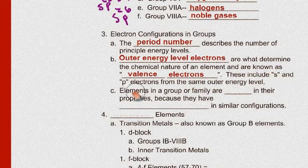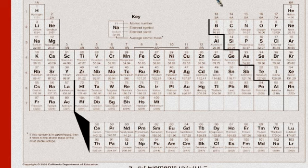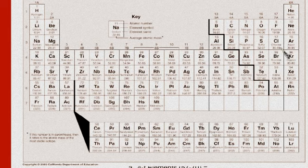Okay. The outer energy level electrons are what determine the chemical nature of an element, and these are known as the valence electrons. These include the S and P electrons from the same outer energy level. So let's talk about this for a second. So when we look at a noble gas, we notice that these guys over here. Helium has a, helium has a 1S2 configuration up here. Now it is completely filled. There, it has the, all of the electrons in its highest possible energy level, which is that 1S2.